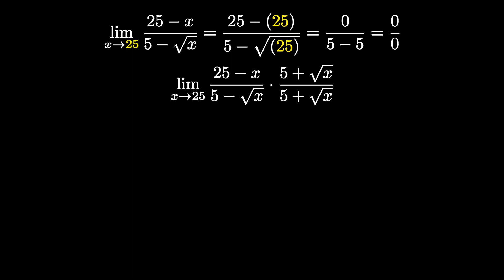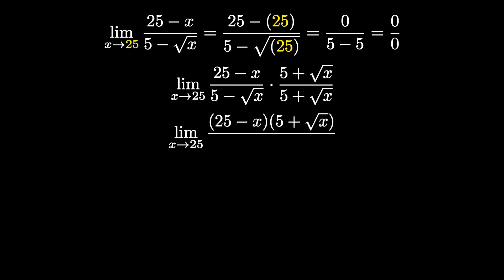Let's clean the function up. We'll leave the numerator as is — no need to simplify that. We will simplify the denominator, since we want to get rid of the radicals there. We essentially FOIL the denominator, but because we have a minus and a plus sign, the outer and inner terms cancel. We only multiply the first and last terms: 5 times 5 is 25, and negative square root of x times positive square root of x gives us negative x, since the radicals cancel leaving just x. So the denominator simplifies to 25 minus x.